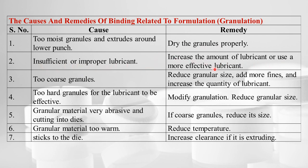Insufficient or improper lubricant — increase the amount or use a more effective lubricant. Two coarse granules — reduce the granular size, add more fines, and increase the quantity of lubricant. If granules are too hard for the lubricant to be effective, modify the granulation process and reduce granule size. If granular material is very abrasive and cutting into dies, reduce the granules in size. If granular material is too warm, reduce the temperature. If granular material sticks to the die and is extruding from the lower punch, increase the clearance.